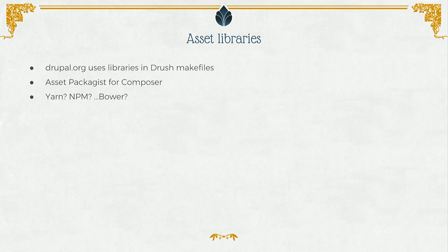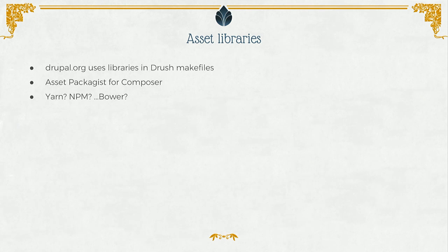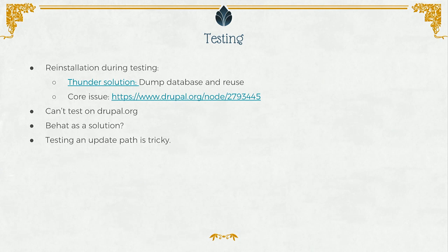I used the Asset Packagist thing and we had huge performance issues — it was super slow to fetch all the dependencies from npm. There was a way to basically fetch the dependencies from npm locally and then build Composer fake packages locally. Speaking from experience using Asset Packagist, it's not taking any more than the usual 25 million minutes when doing a composer update.